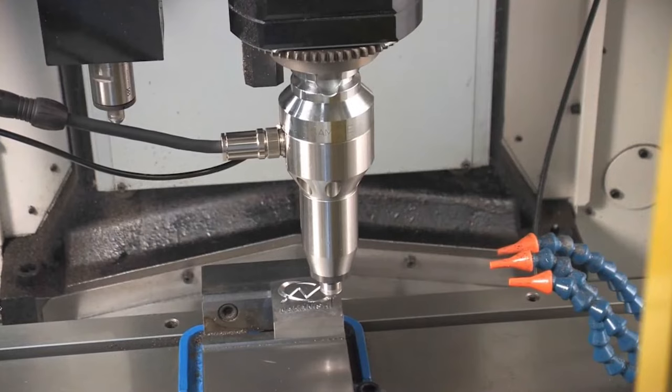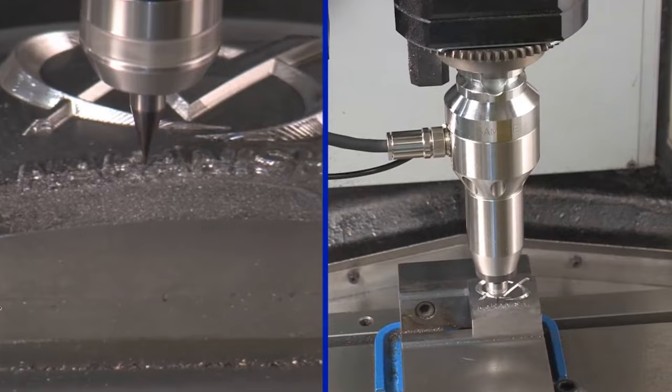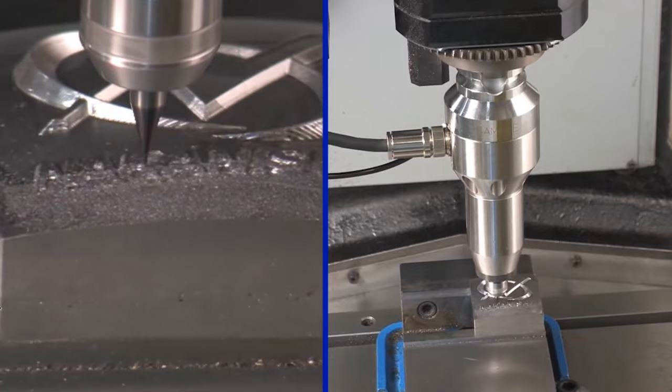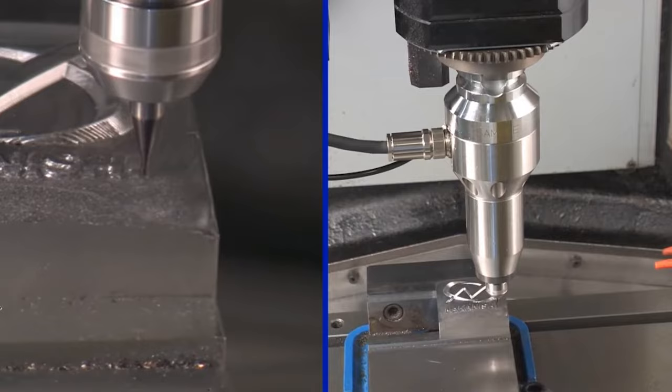The nice thing about these spindles is they can be run 24-7. They're extremely accurate. Our spindle taper is less than a micron TIR. Our standard collets are 3 to 5 microns TIR. So we have the virtual recipe for perfection.